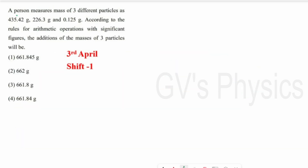Next question: A person measures the mass of 3 different particles. We need to find the sum according to rules for arithmetic operations with significant figures. Short method: find the number of decimal places in each value — 2 decimals, 1 decimal, and 3 decimals. The least number of decimal places is 1, so the answer must also have 1 decimal place. Only Option 3 has 1 decimal place, so Option 3 is the right answer.